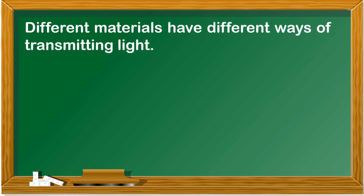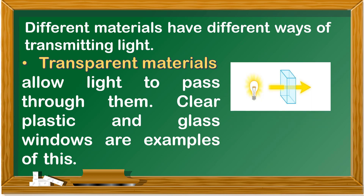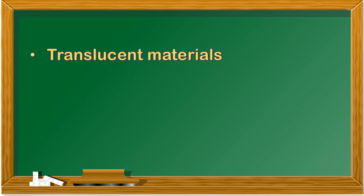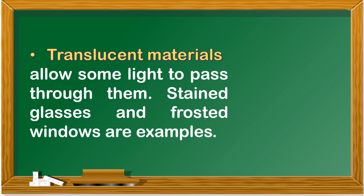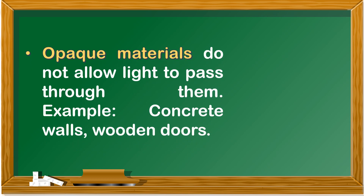Different materials have different ways of transmitting light. Transparent materials allow light to pass through them — clear plastic and glass windows are examples. Translucent materials allow some light to pass through them — stained glasses and frosted windows are examples. Opaque materials do not allow light to pass through them — examples include concrete walls and wooden doors.